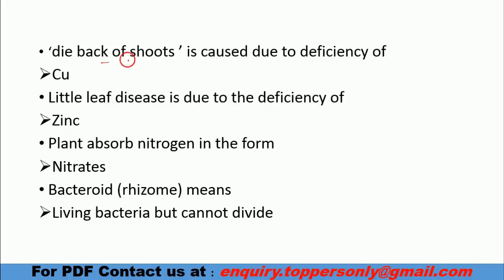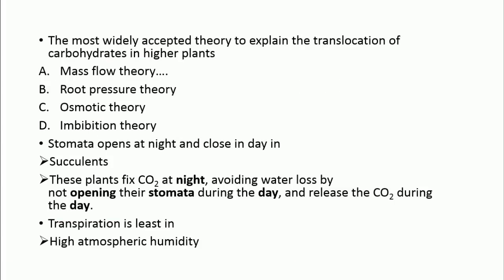Dieback of shoots is due to copper deficiency. Little leaf disease is due to zinc deficiency. Plants can absorb nitrogen in the form of nitrates through nitrification. Bacteroids are called rhizome — they are living bacteria that cannot divide. The most widely accepted theory to explain translocation of carbohydrates in higher plants is mass flow theory. Stomata are usually open in the day because CO2 exchange for photosynthesis occurs through them.